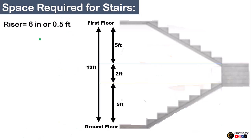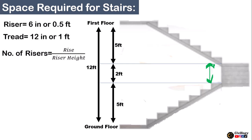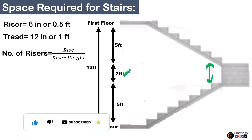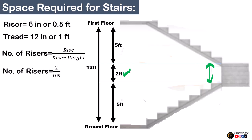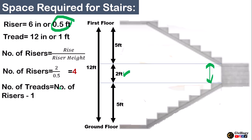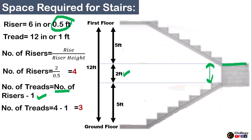Now let's proceed to the second flight. To calculate the number of risers for flight 2, we use the same formula: rise divided by riser height. The rise for the second flight is 2 feet and the riser height is 0.5 feet, giving us 4 number of risers. To calculate the number of treads, again we use risers minus 1, giving us 3 treads. Treads are always 1 less than the number of risers.